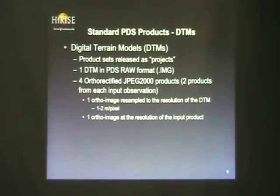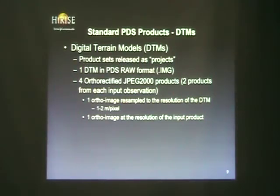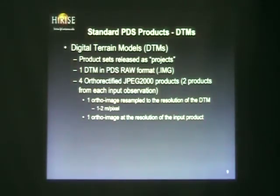We create two different resolutions of the ortho image: one resampled to the same resolution as the DTM, and the other at the same resolution as the original RDR. The DTMs are also usually set at about one meter per pixel per post.